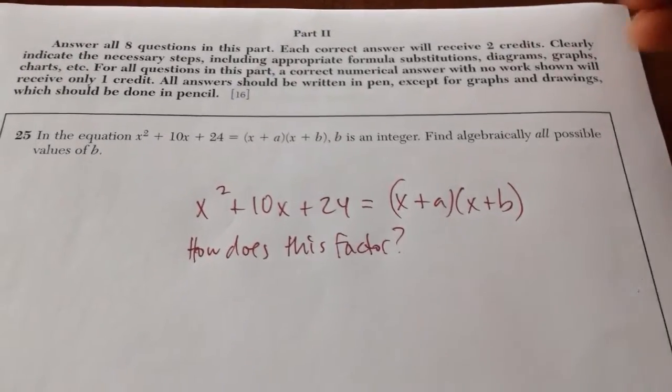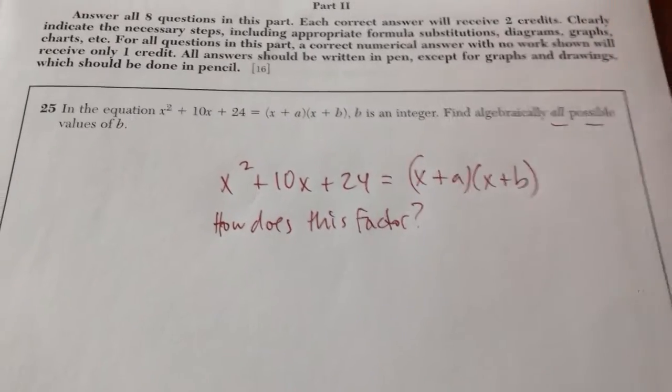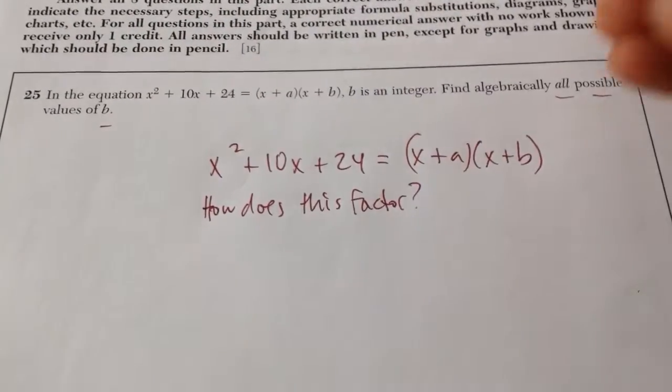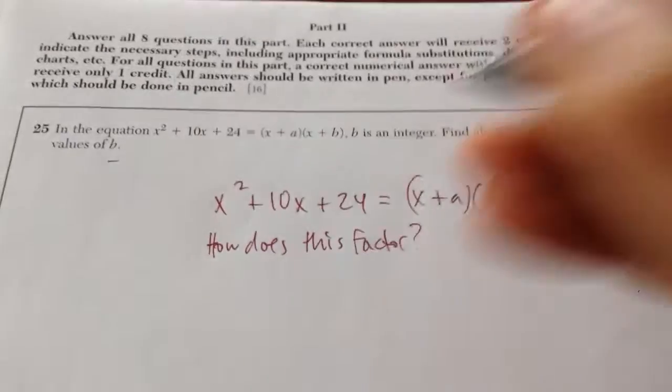In number 25, they say x squared plus 10x plus 24. They want to know all possible values of b. Essentially, what they're asking you to do is, how does this trinomial factor?